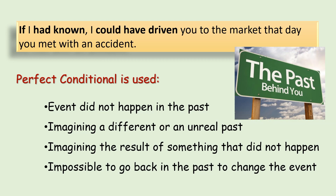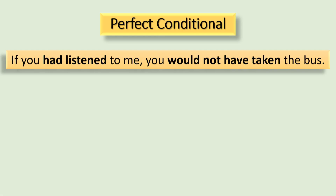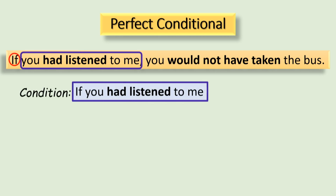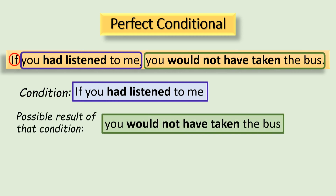Now, let's see other examples from Mr. Kumar's diary of when the perfect conditional has been used. 'If you had listened to me, you would not have taken the bus.' In this sentence, you have the condition — 'if you had listened to me' — and a possible result of that condition — 'you would not have taken the bus.' If only Mrs. Kumar had listened to her husband, the result of the situation would have been different. That is, she would not have taken the bus, and she would not have had an accident.